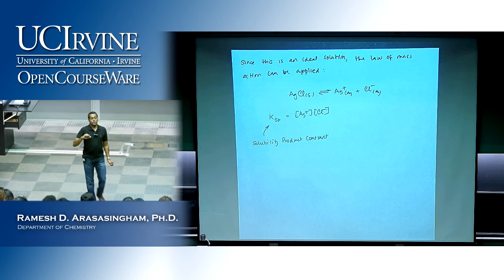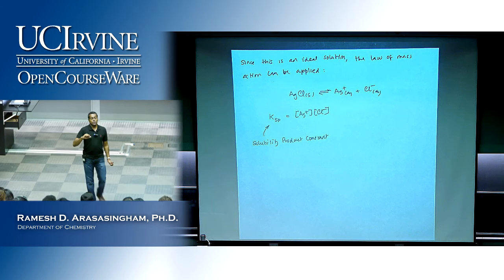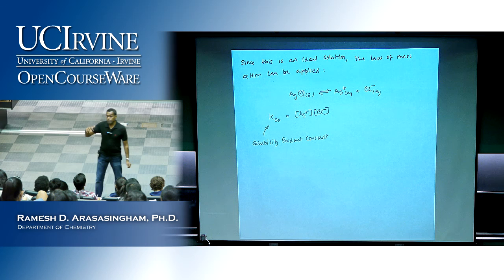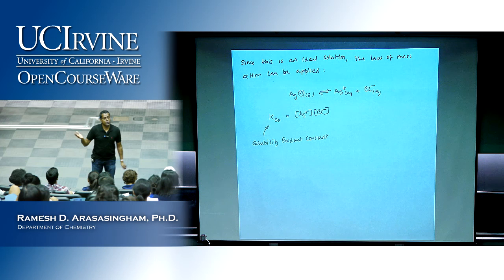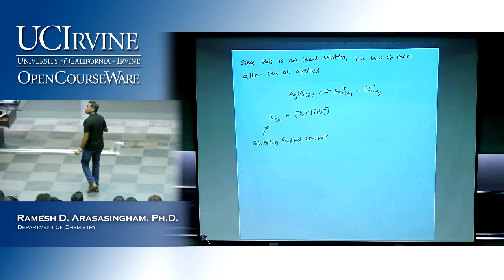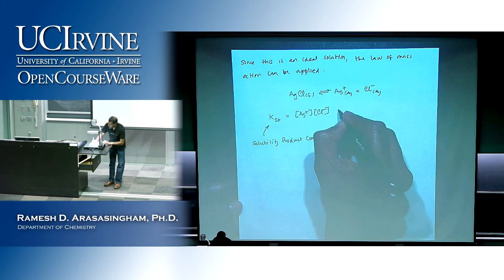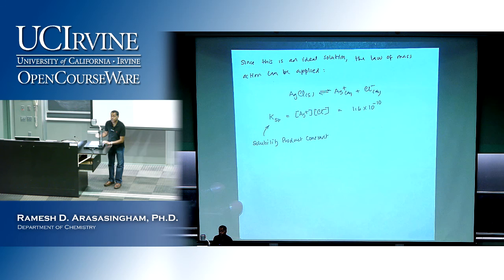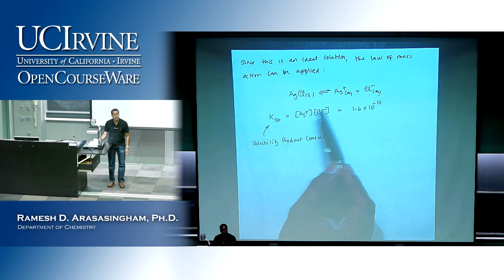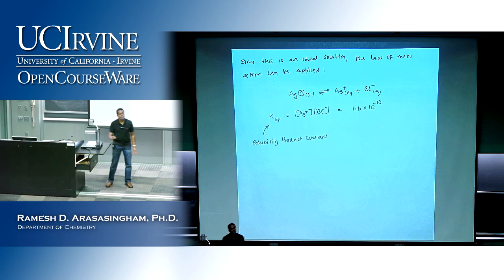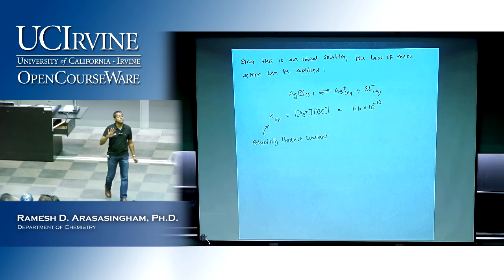All Ksp values are really, really small. If Ksp were large, it would be like sodium chloride, but we can't apply Ksp to soluble substances because their solutions are non-ideal. So we only apply Ksp to insoluble, marginally soluble, or slightly soluble salts. The value for AgCl is about 1.6 × 10⁻¹⁰. The unit would be moles squared per liter squared, though often we omit the unit. This value is at room temperature.